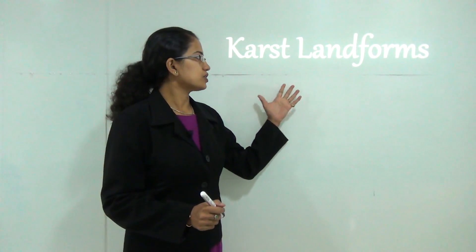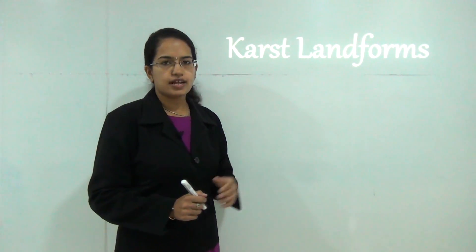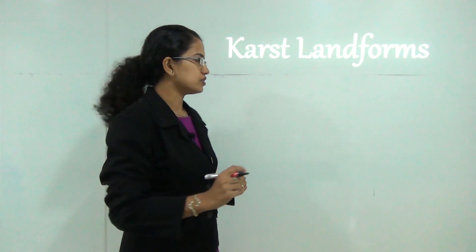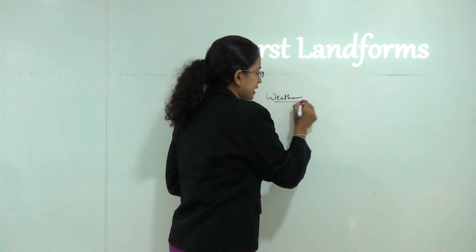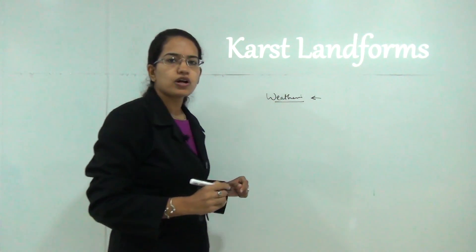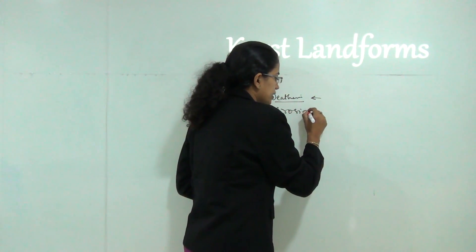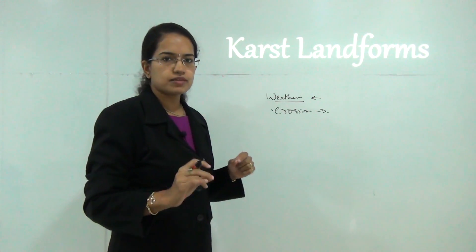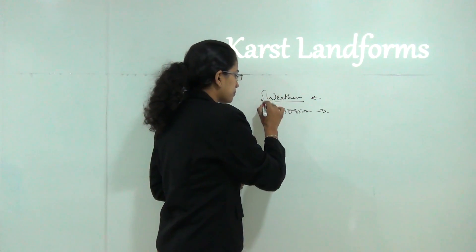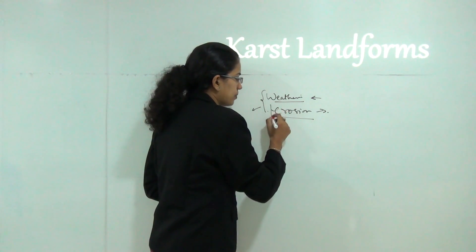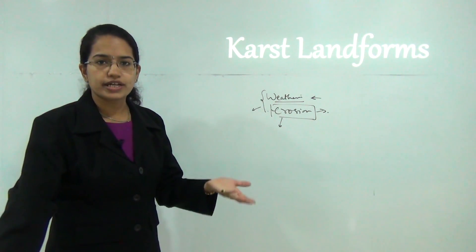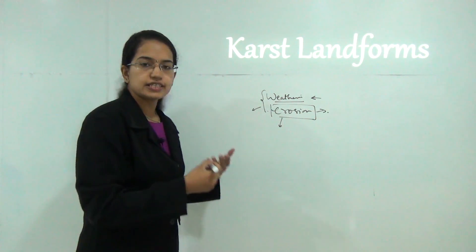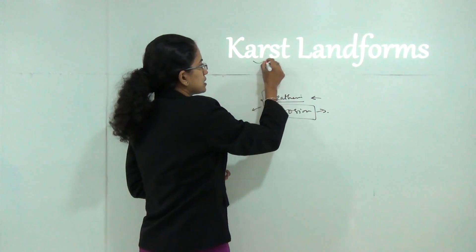Hello, welcome to this session. Today we would be understanding what karst landforms are. In the previous class we discussed about weathering and erosion. Under weathering we talk about breaking down and disintegration of rock, and under erosion we talk about transportation of that material already broken down by weathering. The primary agents of erosion are water, wind, ice or glaciers, and groundwater.